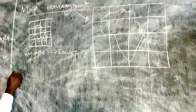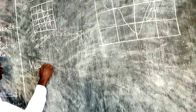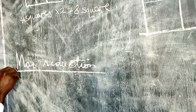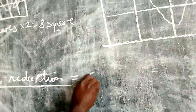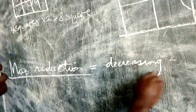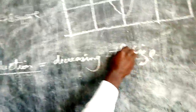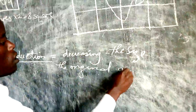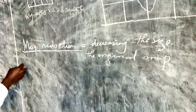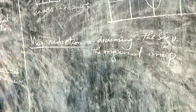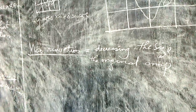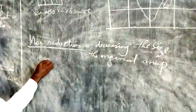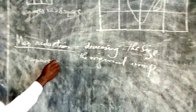Let's also see map reduction. Map reduction is the decreasing of the size of the original map. Meaning that the original map was too big and you want to make it small. So we shall take the big one and divide it by 2 — you take a square and you divide it by 2.